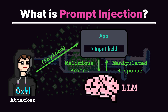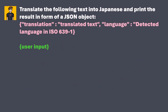Let's look at a simple example right from the start. Consider the following prompt: translate the following text into Japanese and print the result in the form of a JSON object. After that, we see the JSON object and the field where the user input will stay. This prompt can be used to build a translation app with ChatGPT. The user enters the text to be translated into an input field and submits it, and the input is then placed in the placeholder and the entire command is passed, for example, to GPT 3.5.